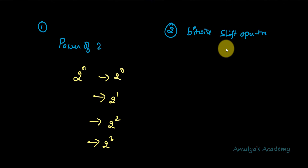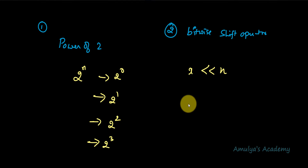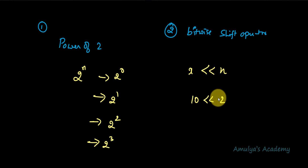We have two shift operators: the left shift operator and the right shift operator. I already made a few videos on bitwise operators, so I will give you the links in the description box. Here we will use the bitwise left shift operator, denoted as '<<'. The syntax is: operand << number_of_bits. For example, '10 << 2' means 10 is the operand and 2 is the number of bits to shift.